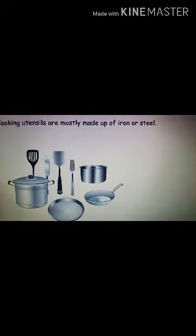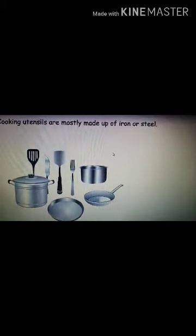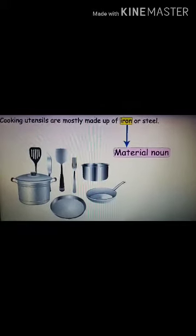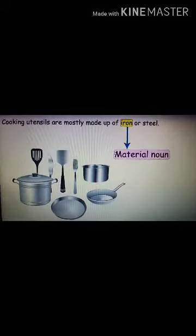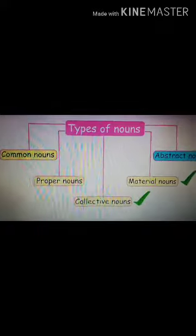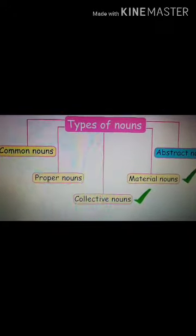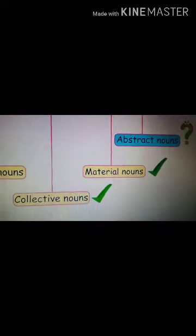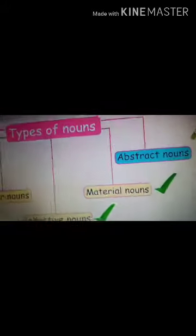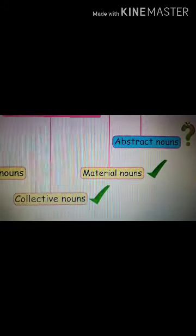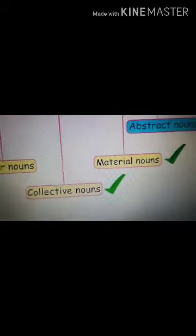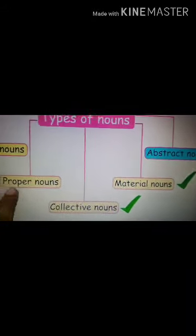I hope it is clear to you, the difference between collective and material nouns. All these are material nouns. I am going to send you the page of your book — you have to do the exercise and learn it. You can see the types of nouns: earlier we did common nouns and proper nouns, and today we have done collective nouns and material nouns. The fifth type, abstract nouns, we will do in the next class.